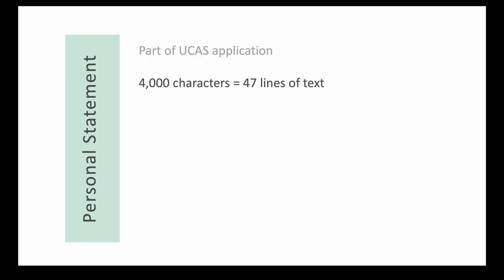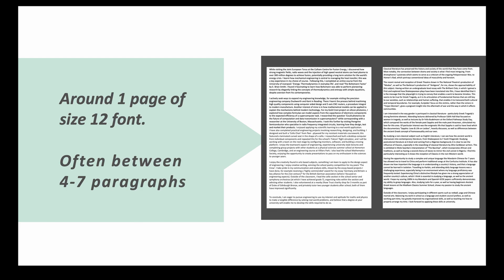The personal statement has an upper limit of 4,000 characters or 47 lines of text. To give an idea of what that actually looks like, on the right here are two examples from our current undergraduates. As you can see, it's about one page of typed text, and people will organise their personal statements in different ways, but it's commonly around four to seven paragraphs.